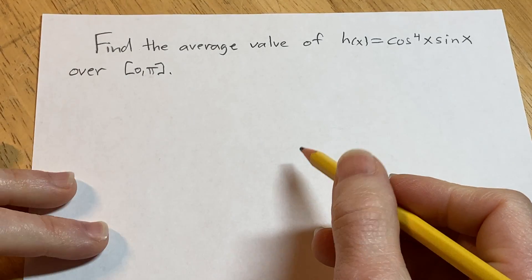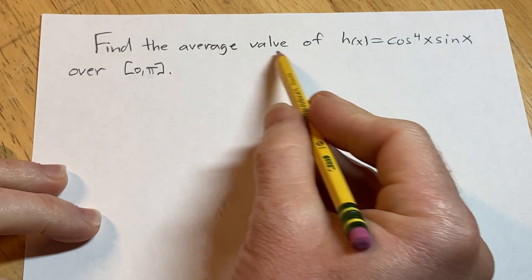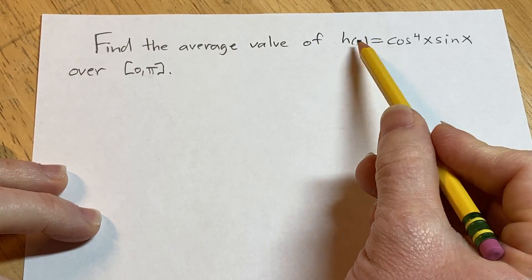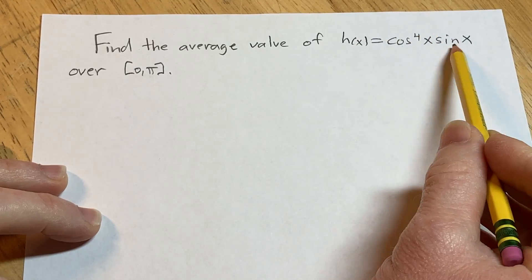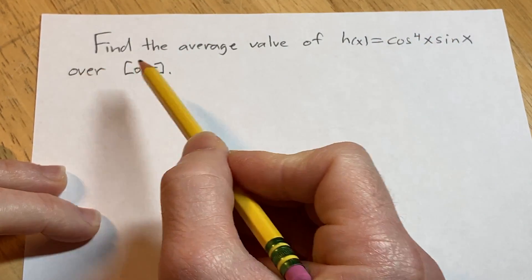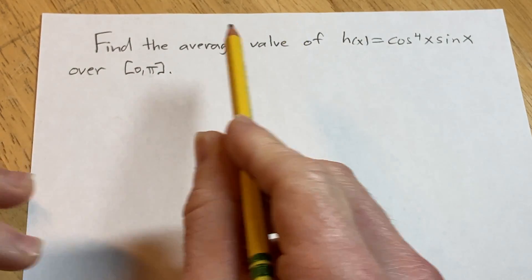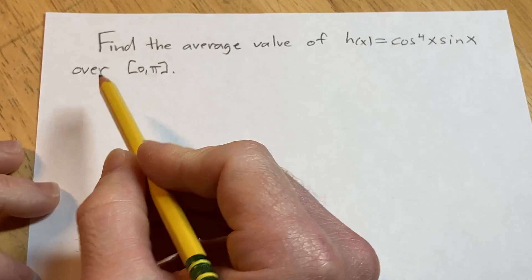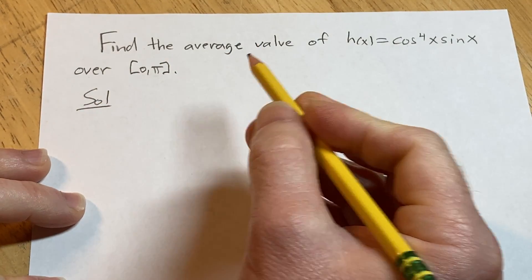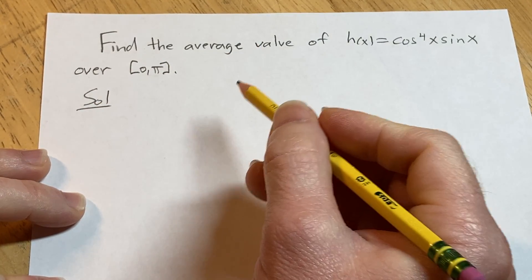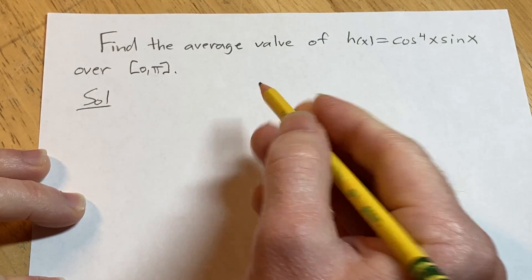Hello, welcome. In this video we're going to find the average value of this function h of x equals cosine to the fourth power of x times the sine of x over the interval 0 pi. Let's go ahead and go through it very carefully. Solution.